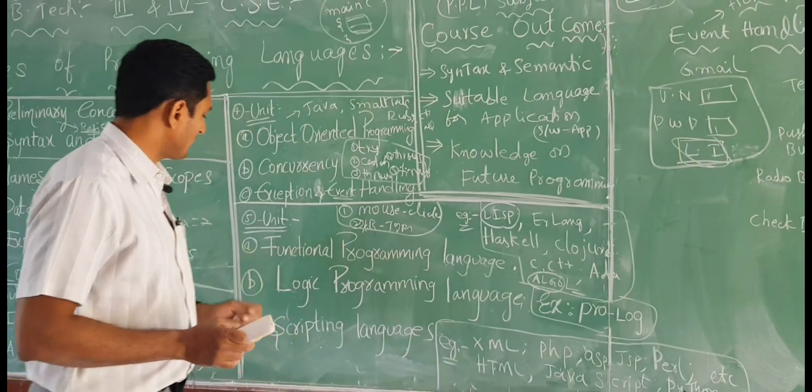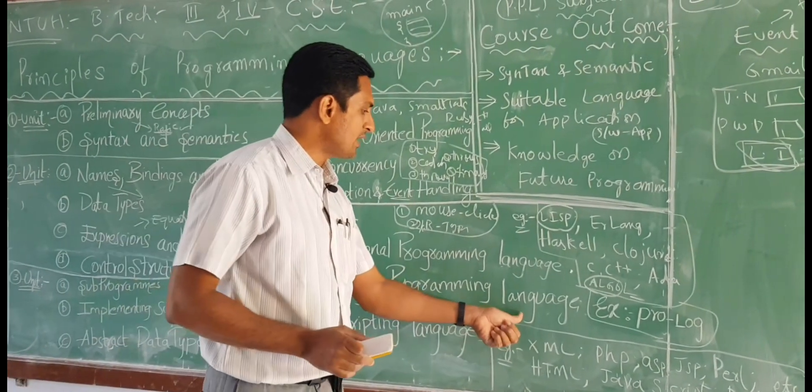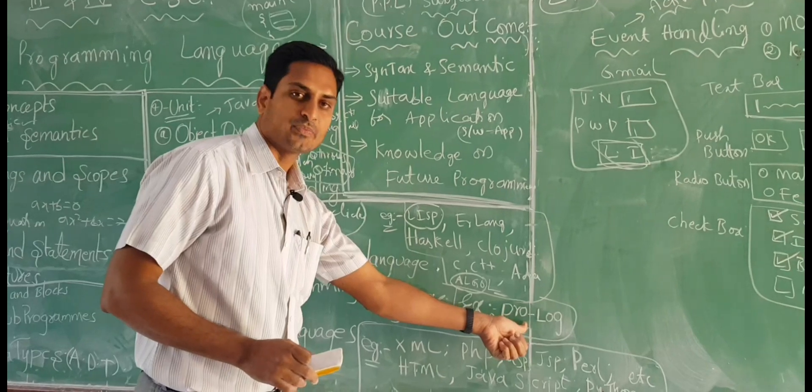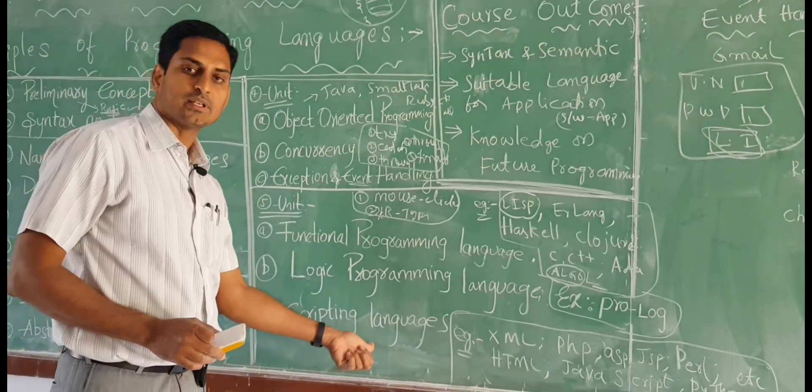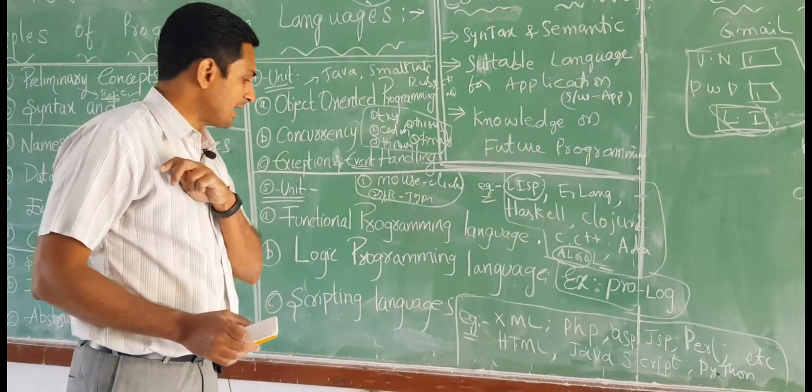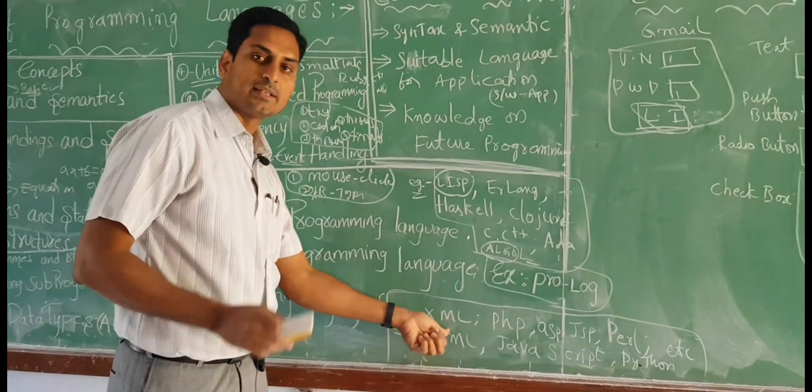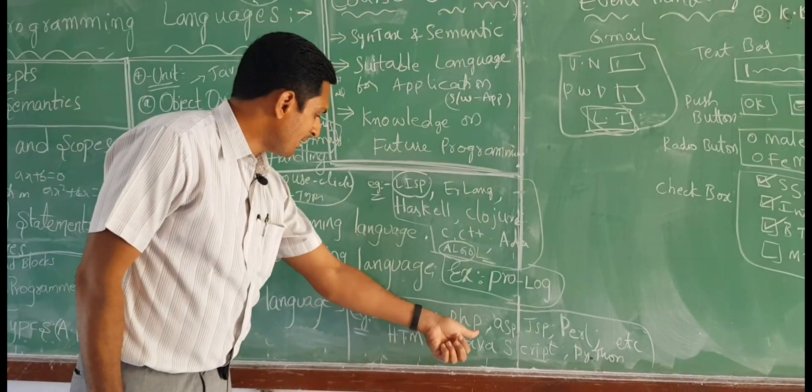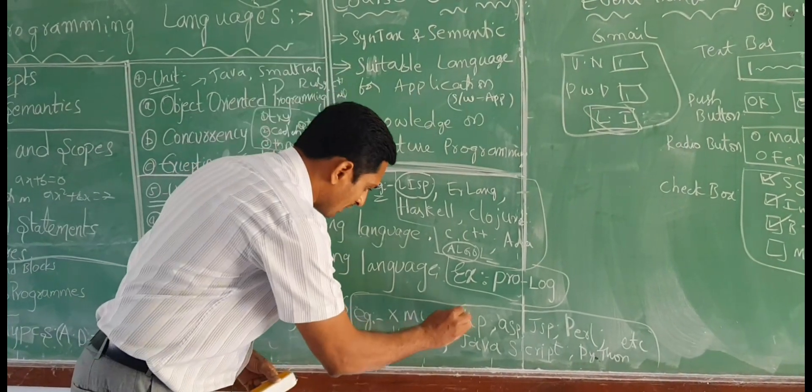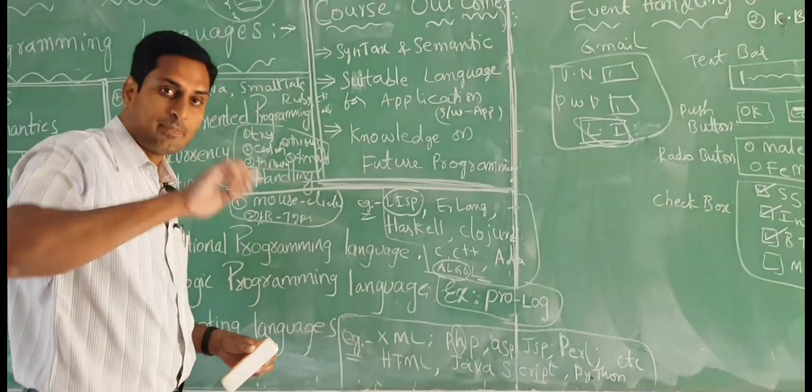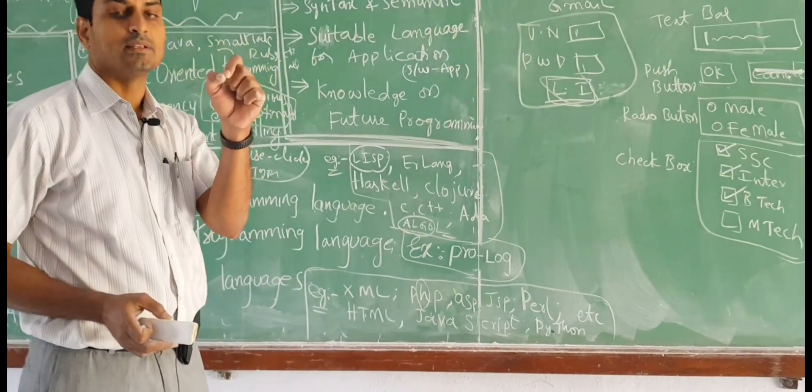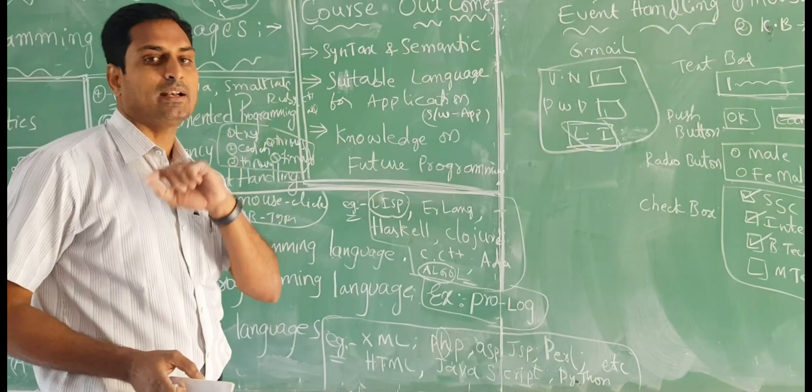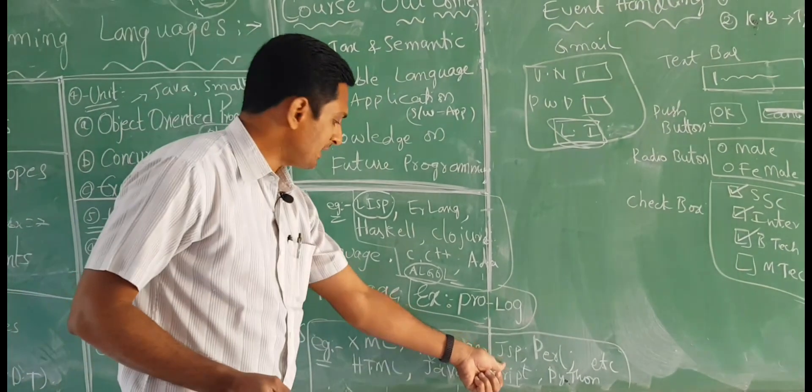But examples like C, C plus plus, Ada, ALGOL also, ALGOL means algorithmic logic, full form algorithmic logic, these are olden days functional programming languages. Logic programming language, one of the examples is Prolog, programming logic. And lastly we have scripting languages, page designing languages, those are XML extensible markup language, PHP hypertext preprocessor, H comes first in full form hypertext preprocessor, ASP active server pages, this is a family of dot net language, and JSP Java server pages, this is a family of Java programming language.